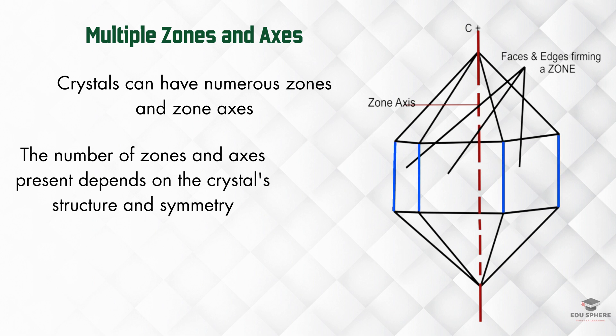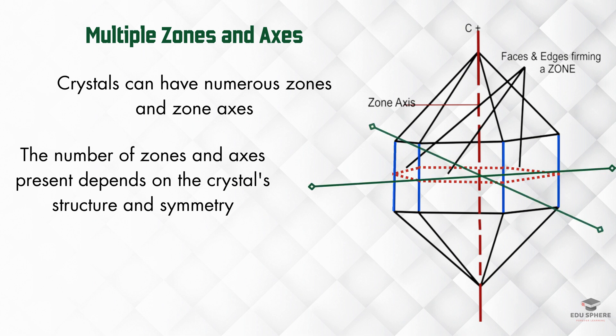For instance, imagine a horizontal plane passing through the middle of the crystal, intersecting the vertical axis c-plus and some of the faces. The edges formed by this intersection would create another zone with a different zone axis, perpendicular to the c-plus axis.